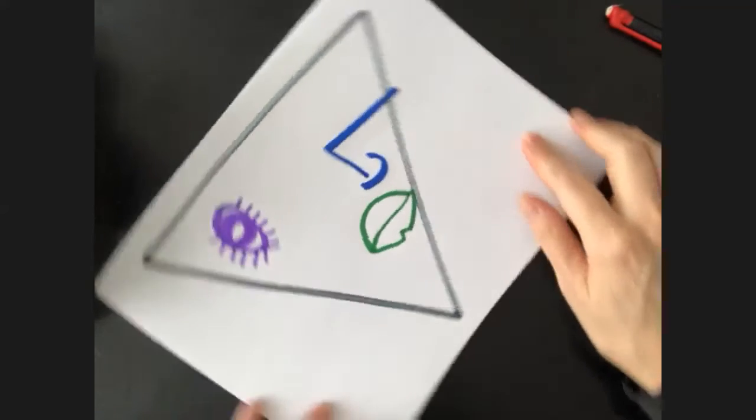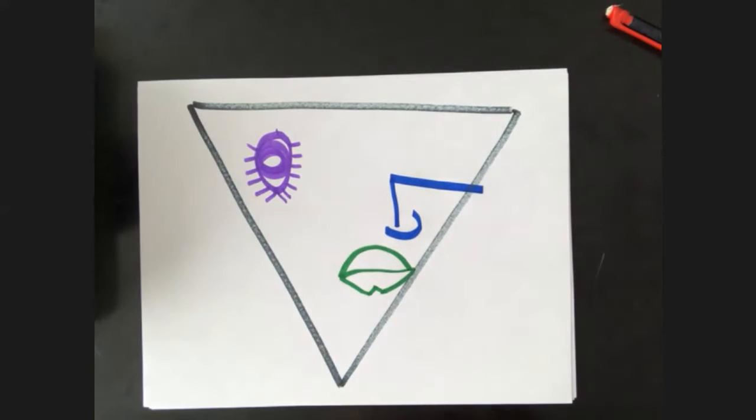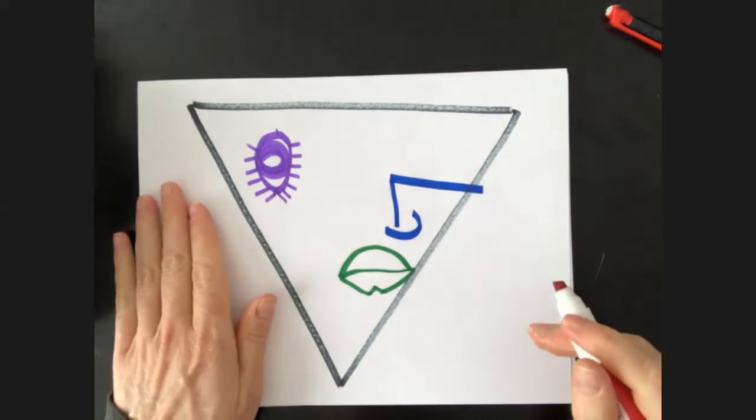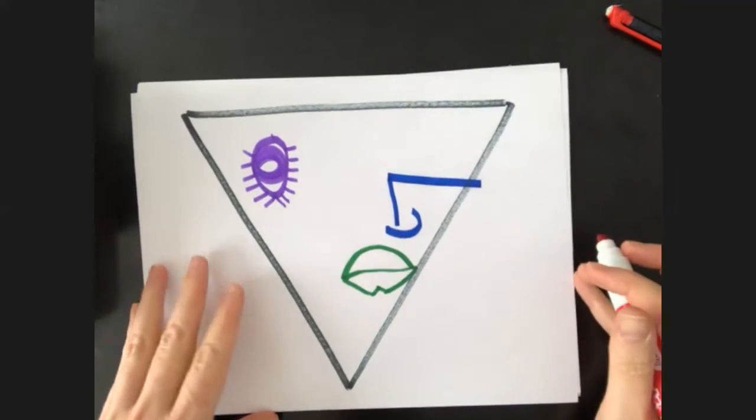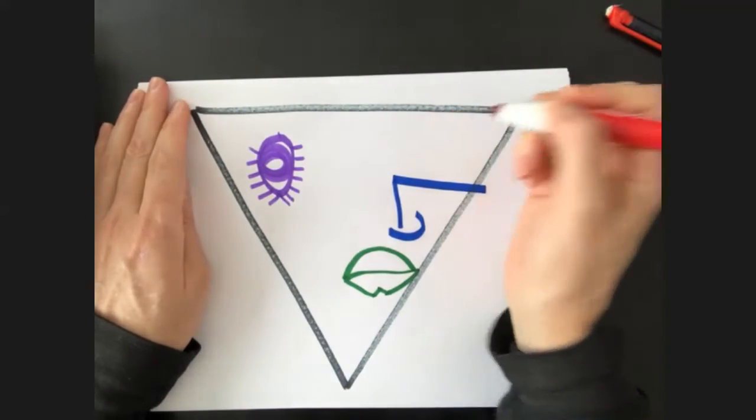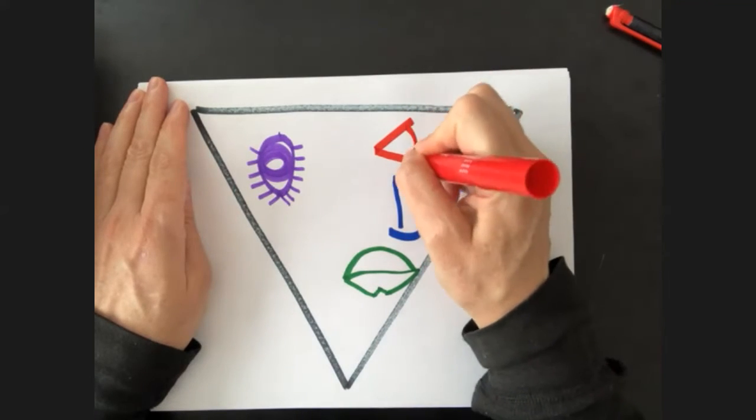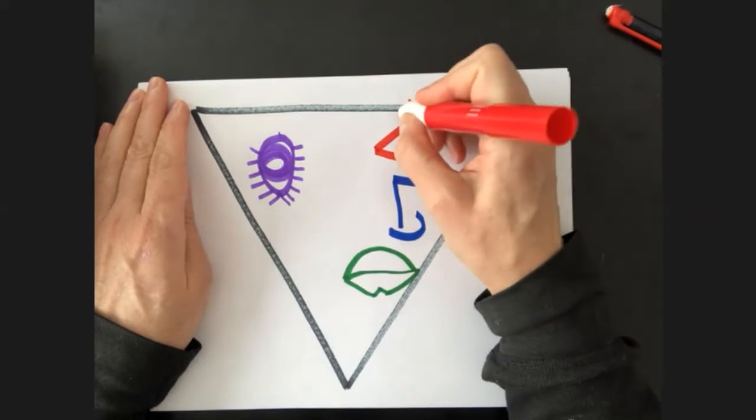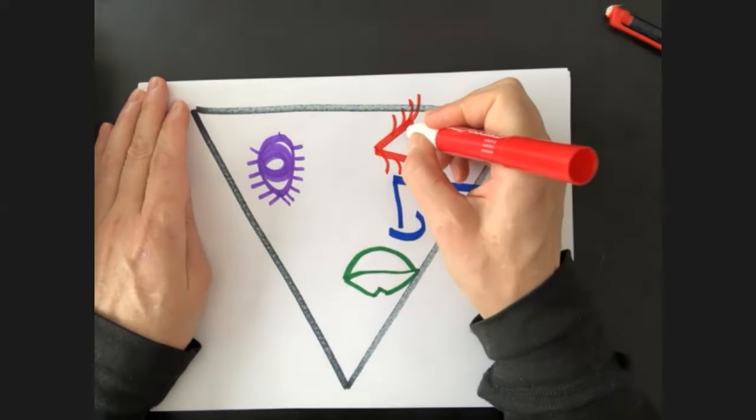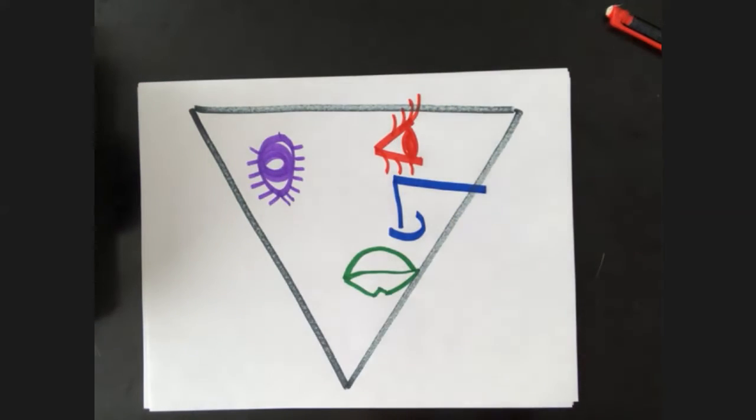So once again, we're going to turn our paper. I'm going to grab a different color. Now this time, since we all have two eyes, you're going to draw another eye. Now it can be the same, or for example, I'm going to draw this eye looking to the side. So it might look kind of strange. That's okay, you can draw your eye however you want.